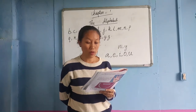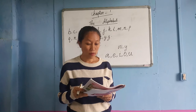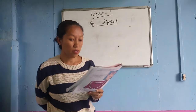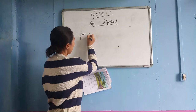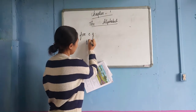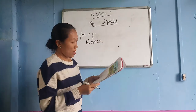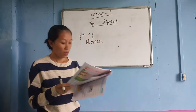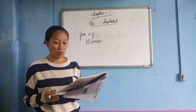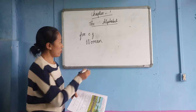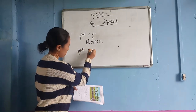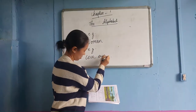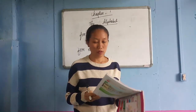You have to remember that W and Y are used as consonants when they appear at the beginning of a word. For example, in the word 'woman,' W is used as a consonant. When W and Y appear in the middle or at the end of a word, they are used as vowels. For example, in the word 'cow,' W and Y are used as vowels.